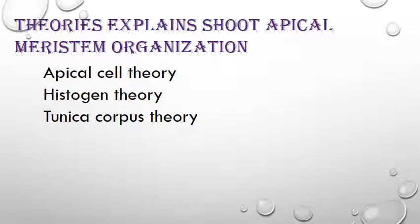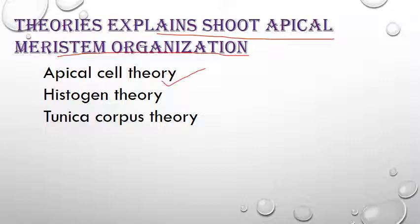There are some theories which explain shoot apical meristem organization — how the shoot apical meristem is organized. The first is Apical Cell Theory, the second is Histogen Theory, and the third is Tunica Corpus Theory. According to Apical Cell Theory, as the name indicates, the shoot apical meristem consists of only a single apical cell that gives rise to the whole plant. This theory is applicable to lower plants only.